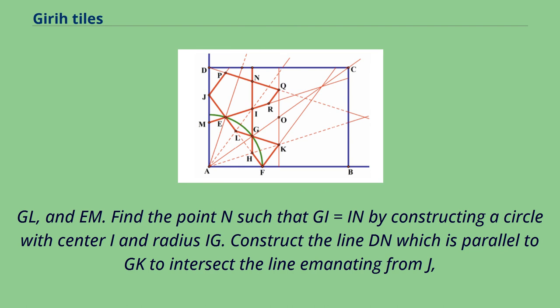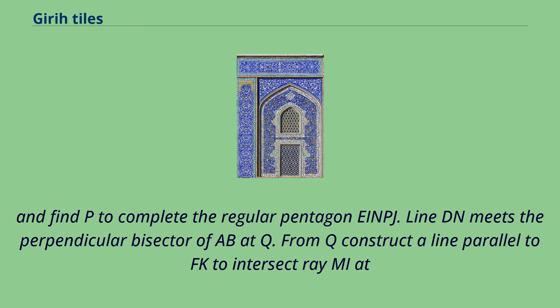Find point N such that GI equals IN by constructing a circle with center I and radius IG. Construct the line DN, which is parallel to GK, to intersect the line emanating from J and find P to complete the regular pentagon. Line DN meets the perpendicular bisector of AB at Q.